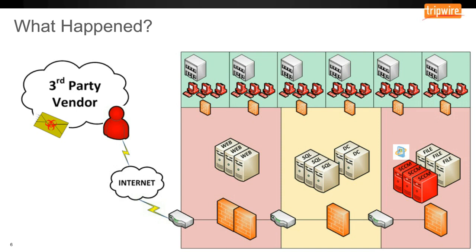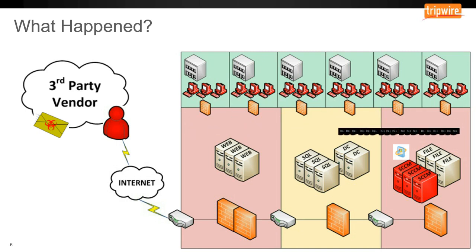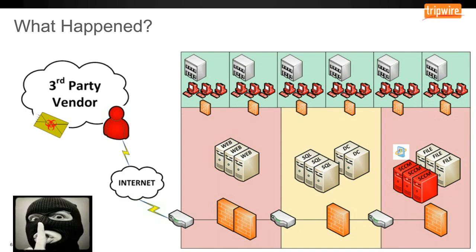This happened between November 27th and December 15th. The memory-scraping malware on each individual point-of-sale machine wrote credit card numbers to a DLL file in the system32 directory, then uploaded that to a staging server local within the Target network. Once a day or once a week, it would then upload those DLL files from the staging server to an FTP server owned by the criminals.